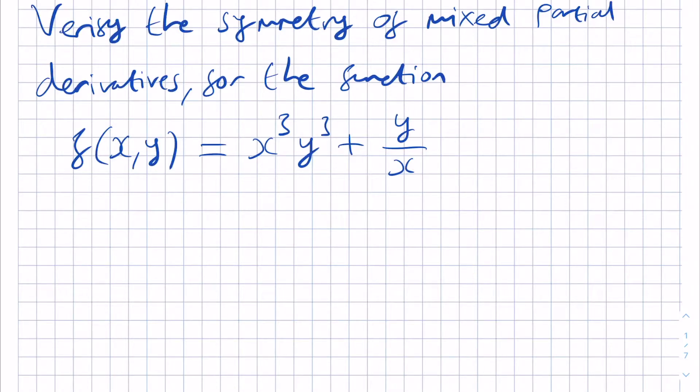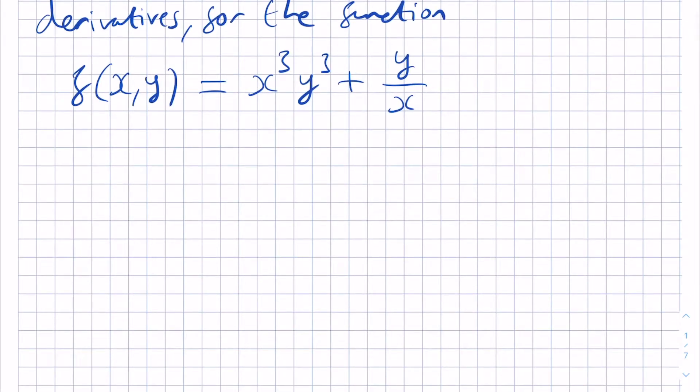To verify the symmetry of mixed partial derivatives, we need to check that for this function f we have d squared f by dx dy as being the same as d squared f by dy dx. That is, it doesn't matter which order you differentiate f in, x then y is the same as doing y then x.